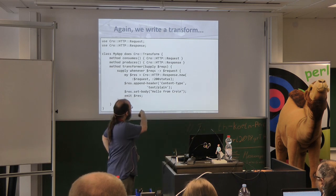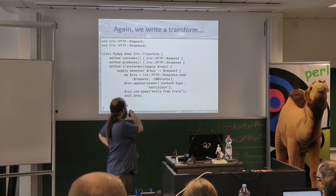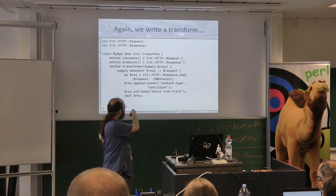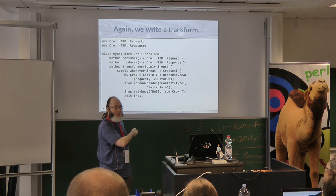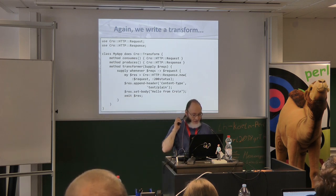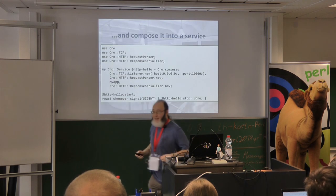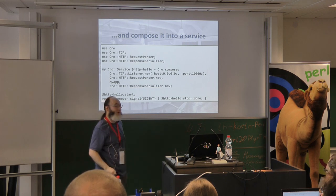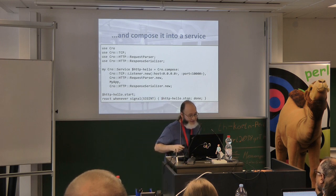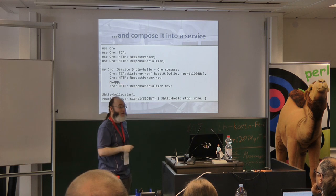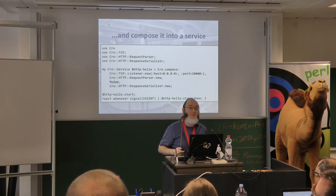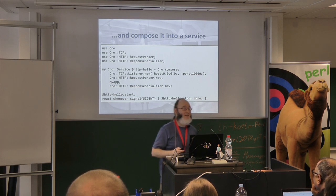The transformer says: whenever we get a request, make a response with status 200, set a text/plain header, set a body, and emit the response. To make this an HTTP service, I need a TCP listener, an HTTP request parser to convert TCP messages into HTTP ones, my application in the middle, and then a response serializer which turns the HTTP response into a stream of TCP messages — and we're done.